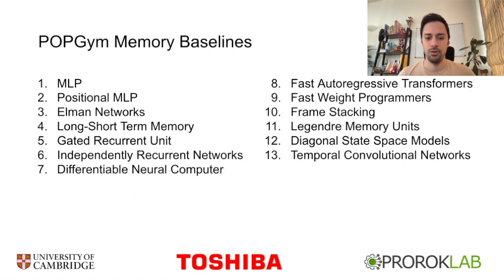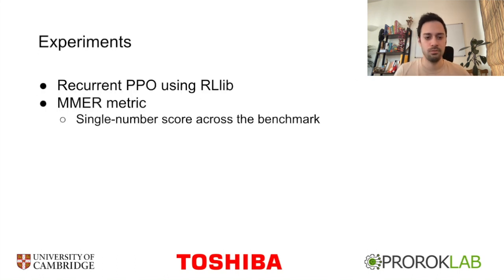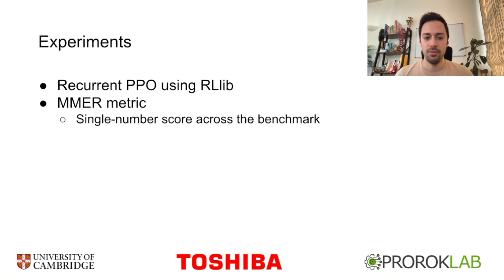We provide 13 memory model baselines consisting of recurrent neural networks, memory-augmented neural networks, transformers, state-space models, and convolution. We ran the largest-scale POMDP study to date by executing experiments over all permutations of PopGym tasks and memory baselines, resulting in over 1,500 separate trials. We propose the MMER metric, which is a single score across the whole benchmark, akin to something like classification accuracy on MNIST.